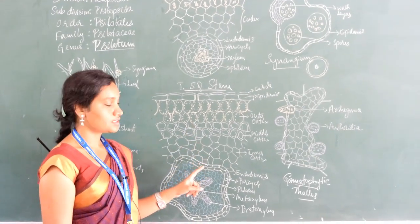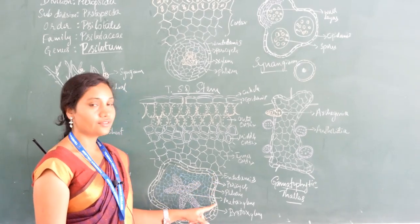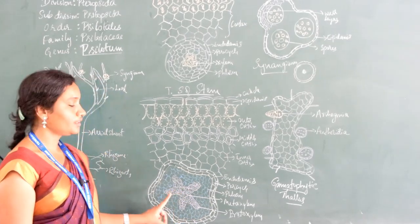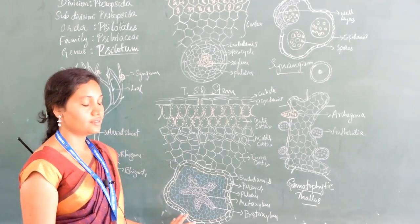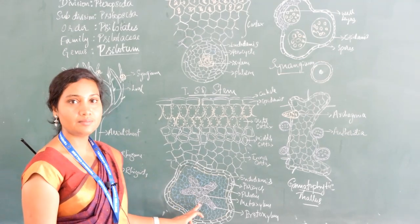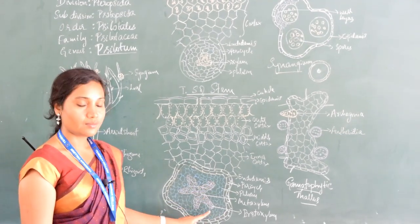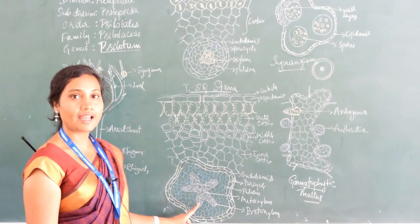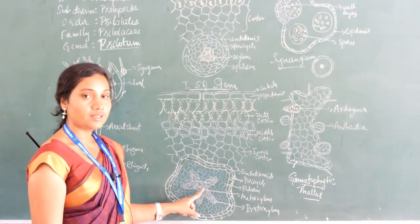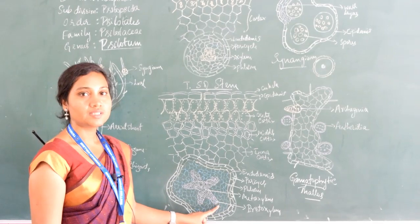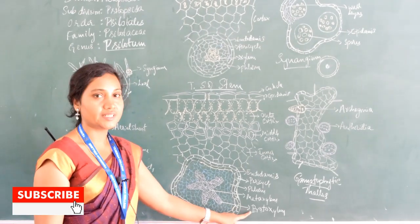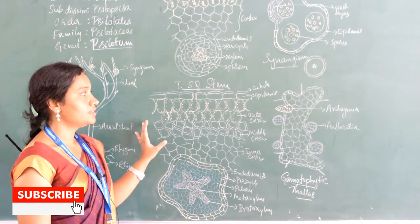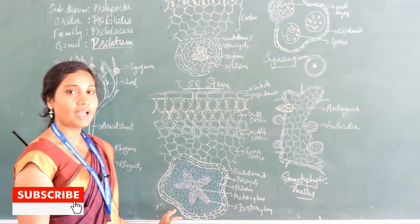In the center, we have the stele region. The cortical region is bounded by a layer of endodermis, followed by pericycle. The stele here has a central core of xylem with radiating arms, giving it a star-shaped structure — this kind of stele is called an actinostele. Metaxylem is towards the center, and the radiating arms show the protoxylem elements. The whole xylem element is surrounded by phloem elements.